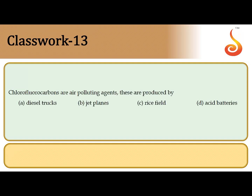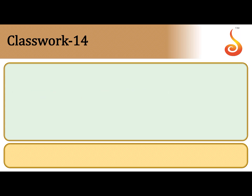The 13th question: chlorofluorocarbons (CFCs) are mostly produced by aerosols, refrigerators, air conditioners, and jet planes. Among the given options, the correct answer is option B: jet planes, which are a source of chlorofluorocarbons.